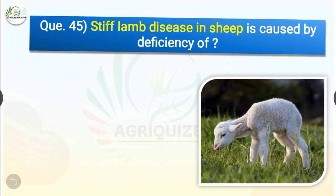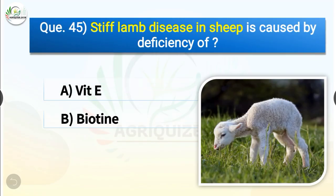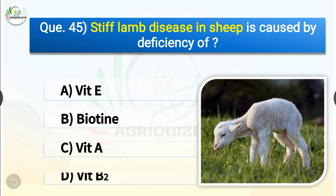Question number 45. Stiff lamb disease in sheep is caused by deficiency of dash. The options are vitamin E, vitamin A or vitamin B2. The correct answer is option A, vitamin E. So stiff lamb disease in sheep is caused by deficiency of vitamin E.